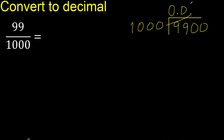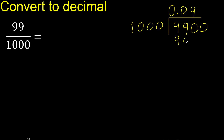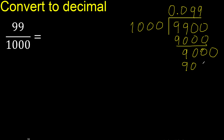Now it is not less. 1000 multiplied by which number is nearest but not greater? Multiplied by 9 is 9000. Subtract — 9000. 1000 multiplied by 9 is 9000. It is not greater, subtract: remainder is 0. Therefore finish.